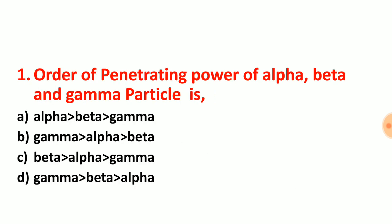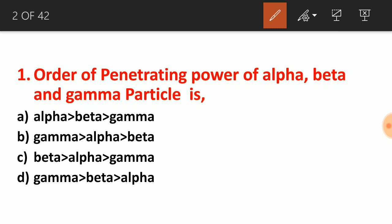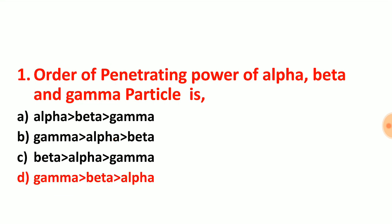Let us see our first question: order of penetrating power of alpha, beta and gamma particle. We know that the particle having maximum mass will have less penetrating power, and gamma is chargeless and massless, so it should have maximum penetrating power. Alpha particle should have minimum penetrating power because of its more mass. Maximum penetrating power is for gamma, then beta, then alpha. So option choice D is the correct answer for question number 1.